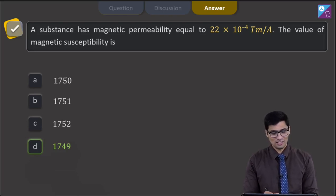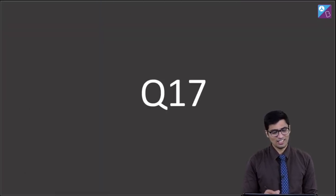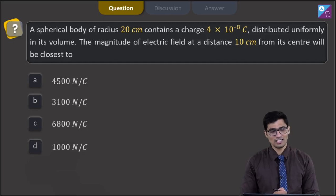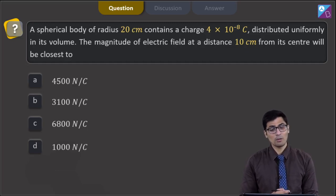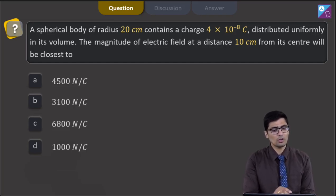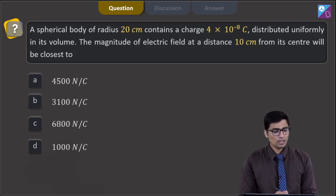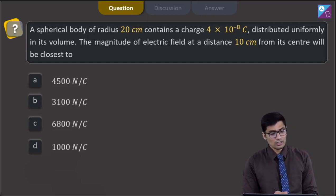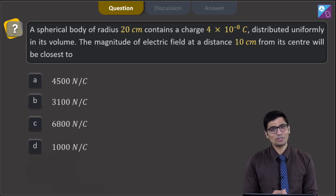Moving on to the next question — this is question number 17. A spherical body of radius 20 centimeter contains a charge 4 into 10 raised to power minus 8 coulomb distributed uniformly in its volume. The magnitude of electric field at a distance 10 centimeter from its center will be closest to: 4500, 3100, 6800, or 1000 newton per coulomb.